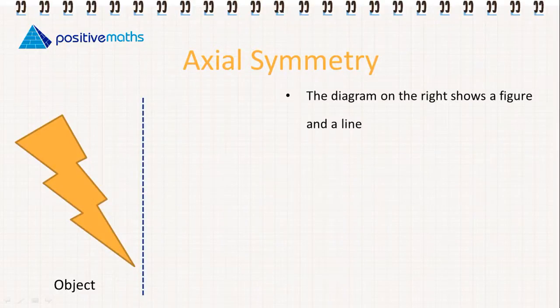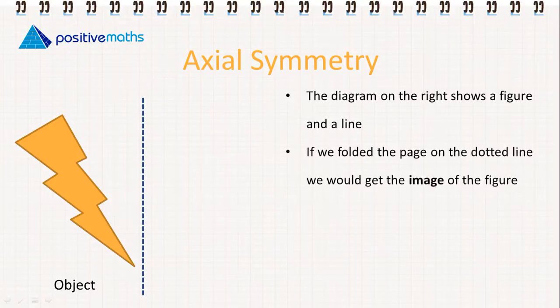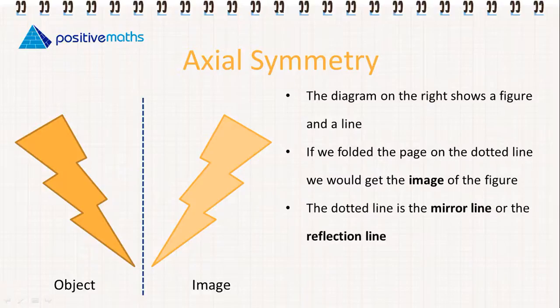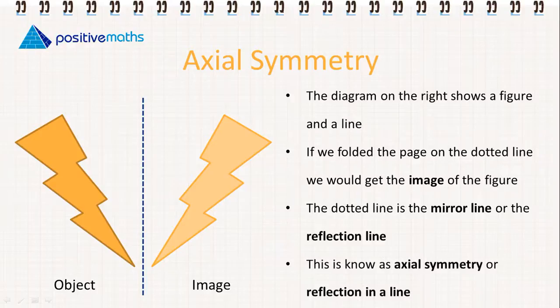The diagram on the right shows a figure and a line. So we have an object and the dotted line. If we fold the page on the dotted line, we would get the image of the figure. So the dotted line is the mirror line or the reflection line. This is known as axial symmetry or reflection in a line.